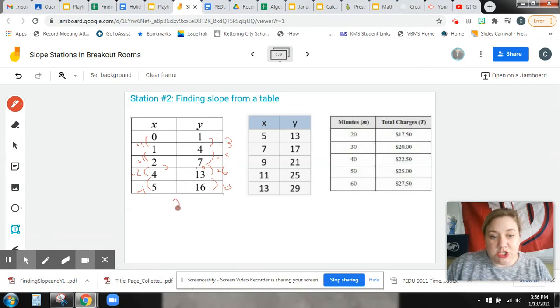So here we see the rate of change, the change in Y is three, the change in X is one. So the slope would be three over one. And you're going to do the same thing for these two.